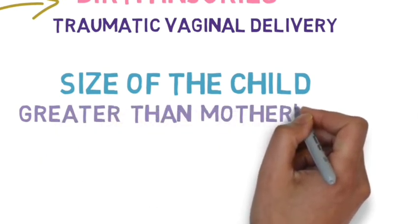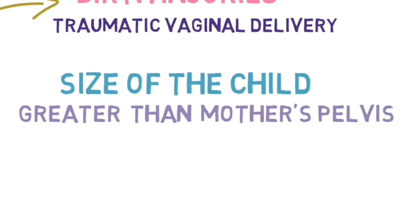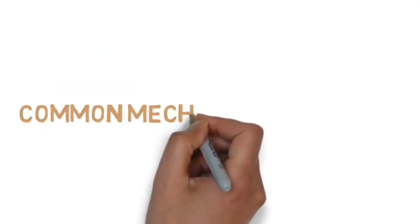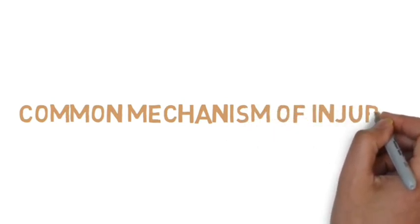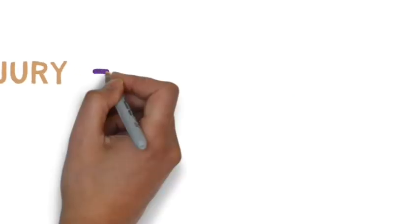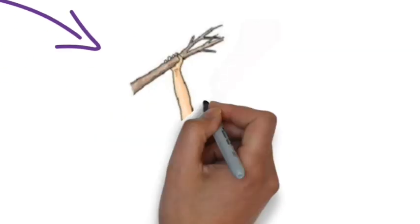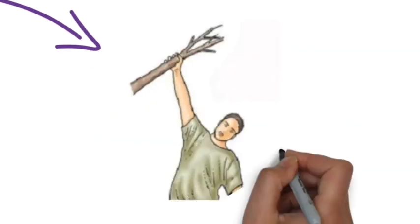The common mechanism of injury involves a person who tries to save himself from falling down a tree or a height, tends to tangle on a thing or a branch of a tree in order to save himself from falling, accidentally injuring the lower trunk of the brachial plexus.